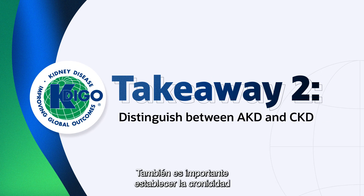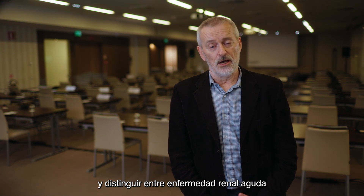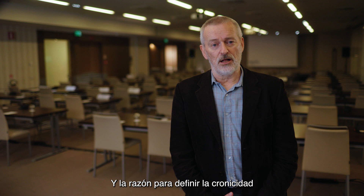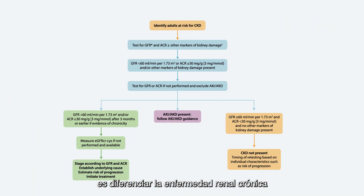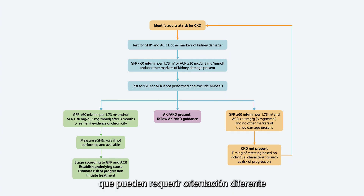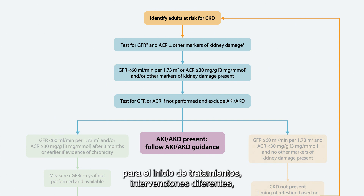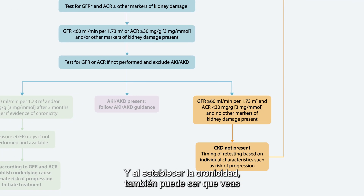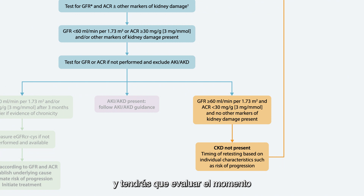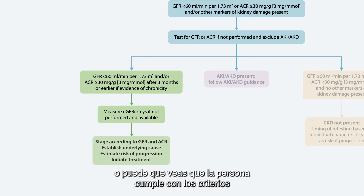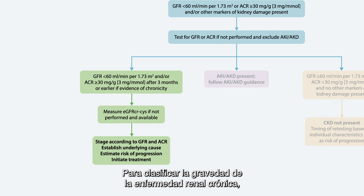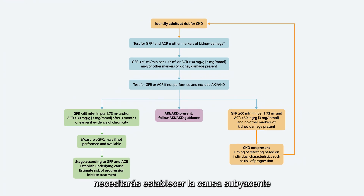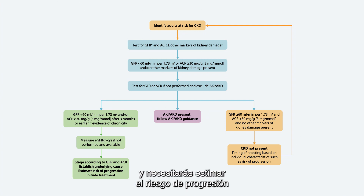It's important to establish chronicity and to distinguish between acute kidney disease and chronic kidney disease. The rationale is to differentiate CKD from acute kidney diseases including acute kidney injury, which may require different guidance related to timelines for initiation of treatments, different interventions, and have different etiologies and outcomes. By establishing chronicity, you may find the person doesn't yet have CKD but remains at risk — requiring future retesting — or meets CKD criteria, requiring accurate GFR staging, identification of underlying cause, and estimation of progression risk to initiate treatment.